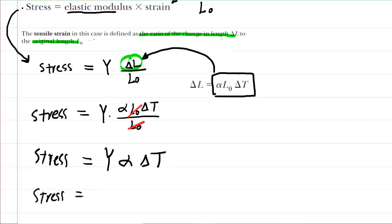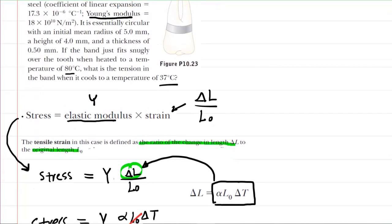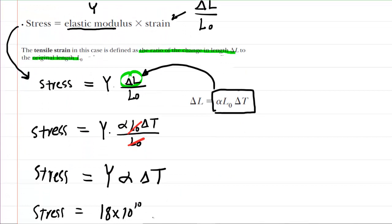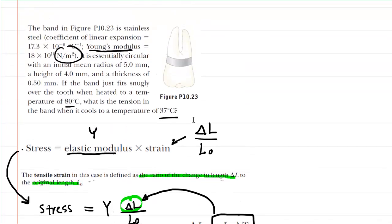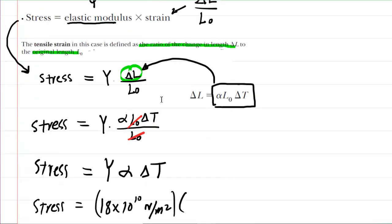The Young's modulus was given in the question. It was 18 times 10 to the power of 10, in units of newtons per meter squared. Then we're going to multiply that by the given value for the coefficient of linear expansion, and that was given as 17.3 times 10 to the negative 6 inverse degrees Celsius.